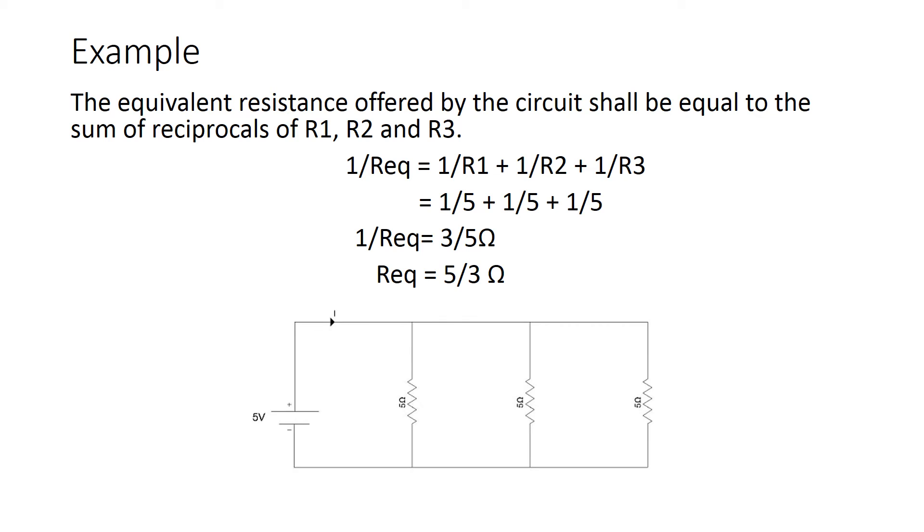Consider a circuit with three resistances, each of 5 ohms, connected in parallel. The sum of reciprocals of each resistance is 3 by 5. Hence the equivalent resistance is the reciprocal of the sum, that is 5 by 3.